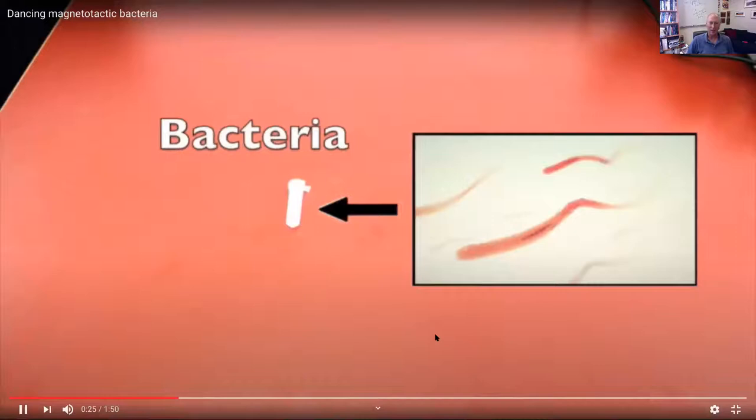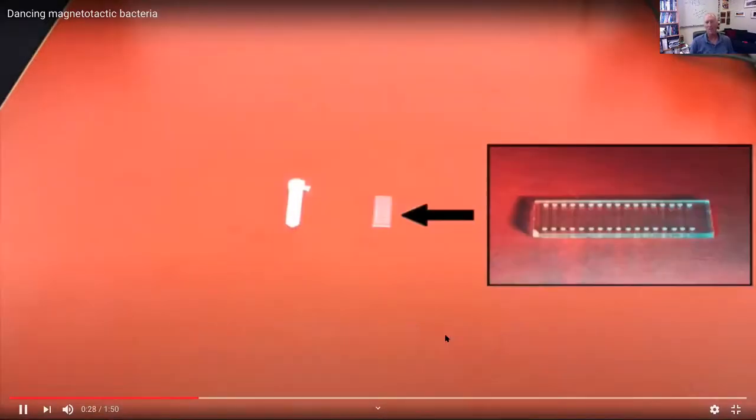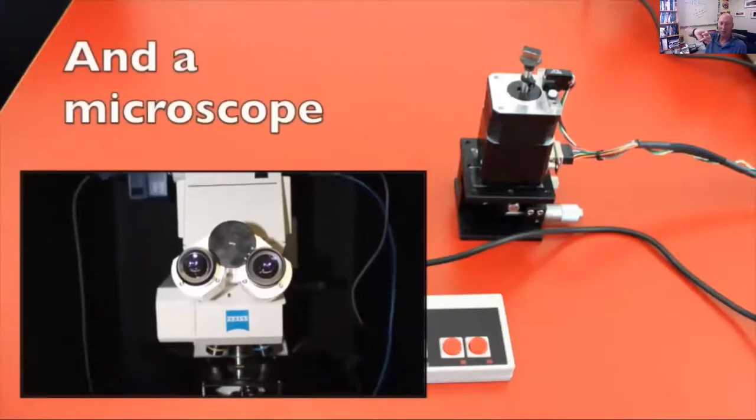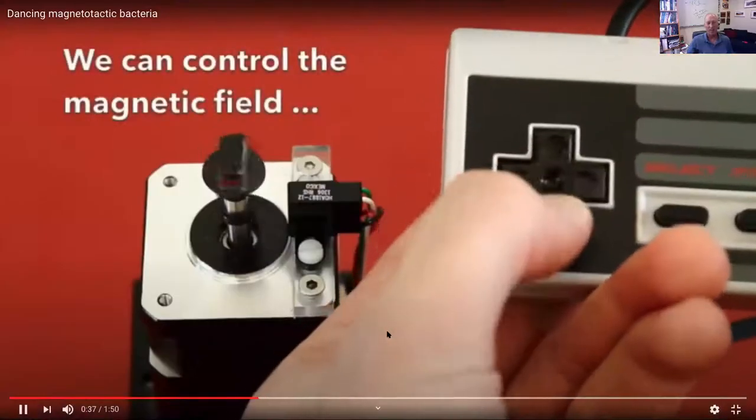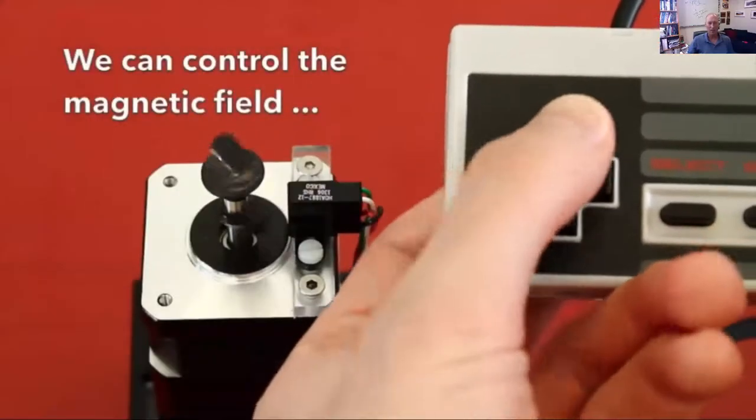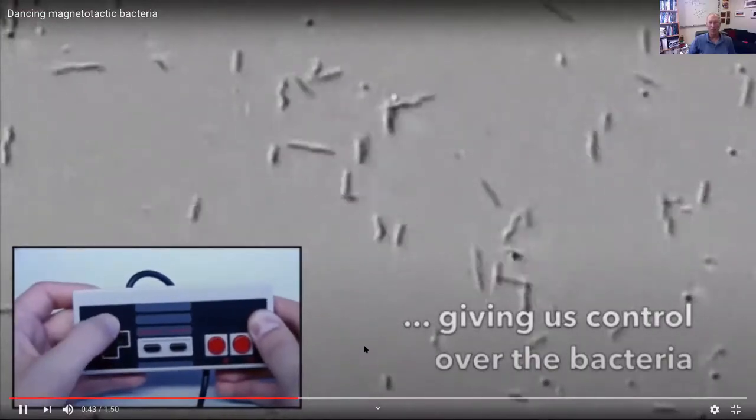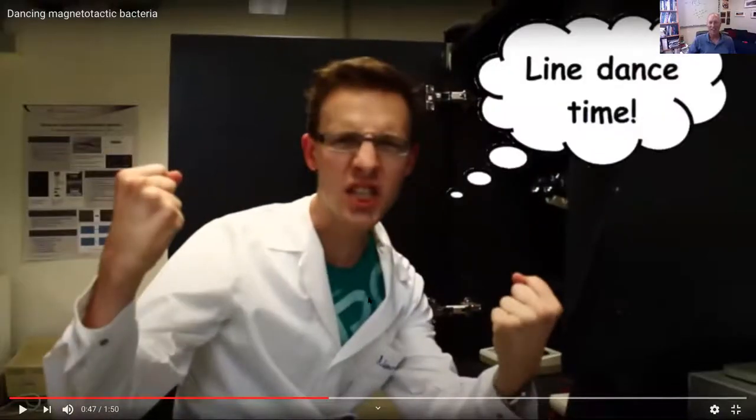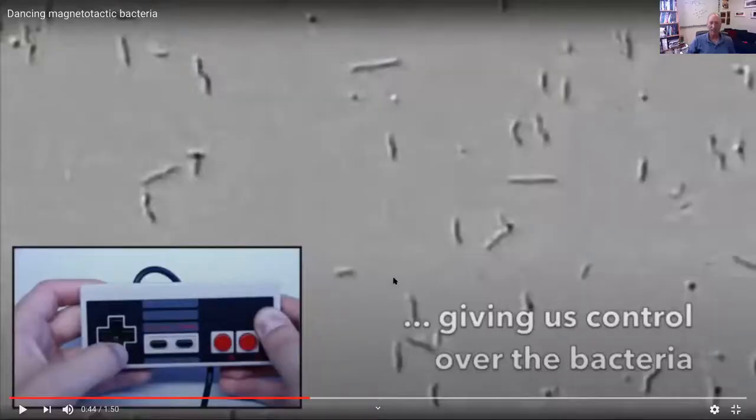So what these guys did is they made a kind of a cool little controller and then used it to control the direction that the bacteria are swimming on this microscope slide. And so they use a video game controller here to essentially move them around. So you see most of the bacteria are moving together. If you go back just a second, you see that not all the bacteria are doing exactly the same thing. So they don't necessarily all have the same length magnetite chain, so they don't necessarily respond the same way. But most of them are responding the same way.